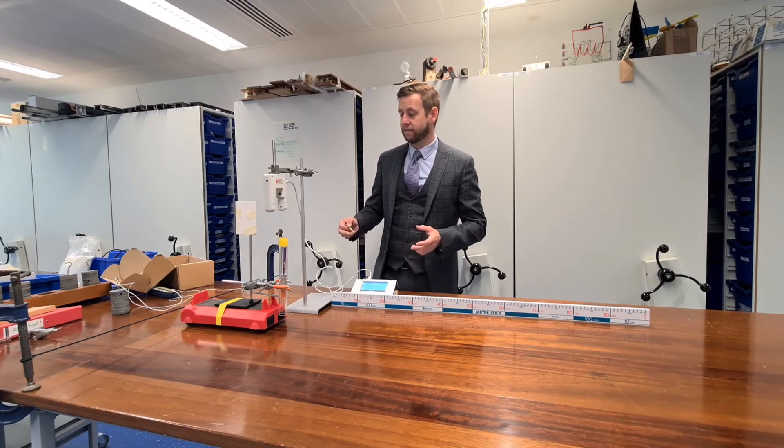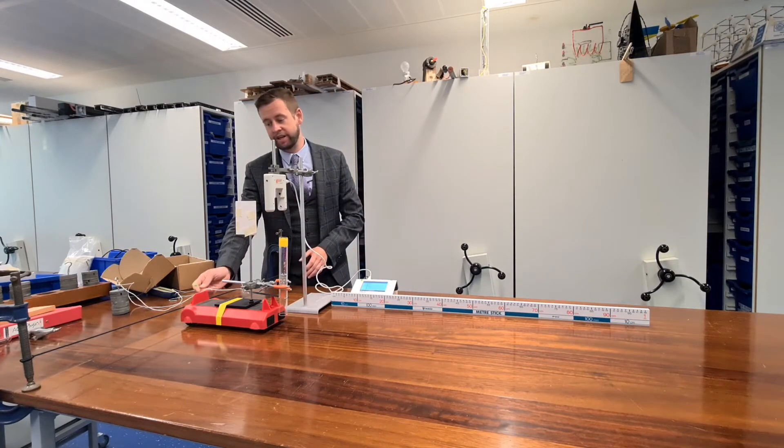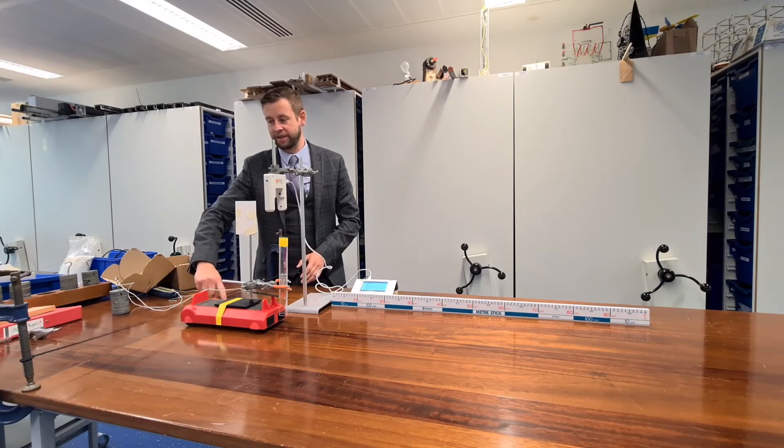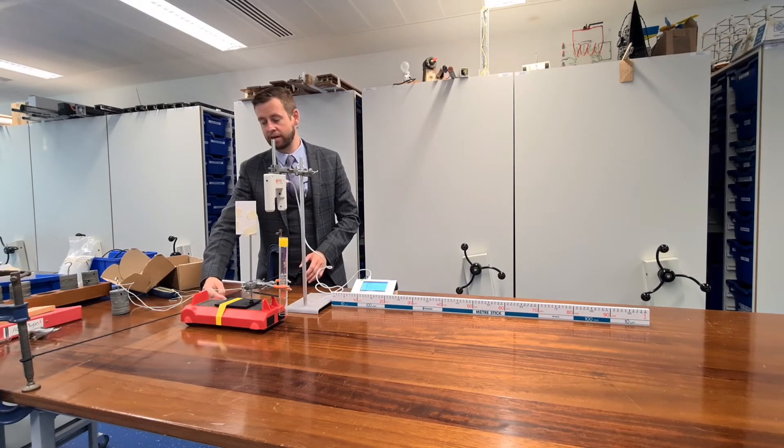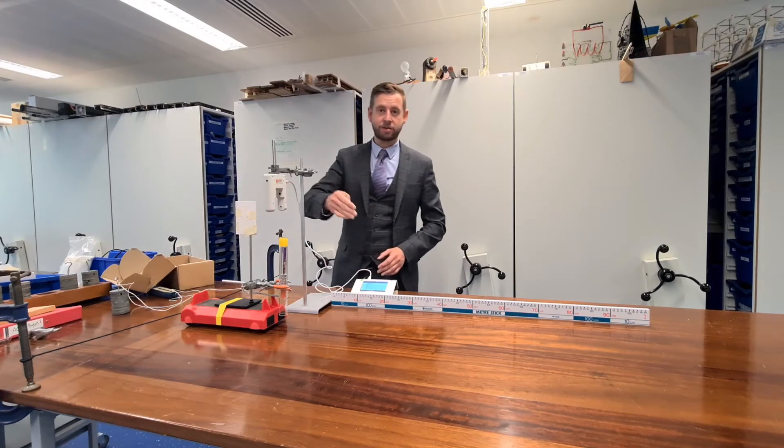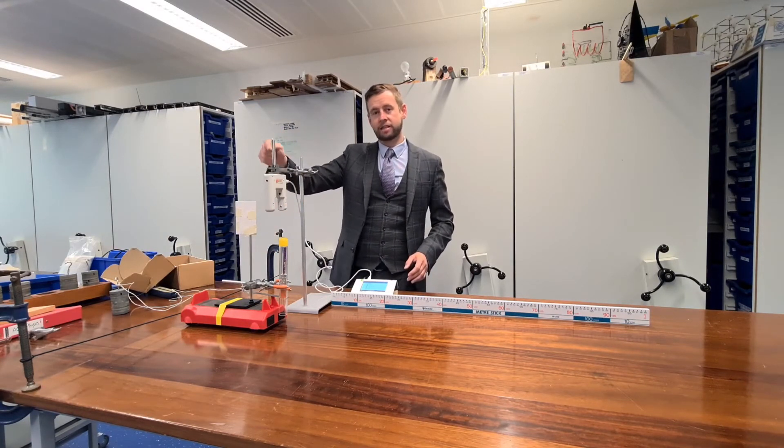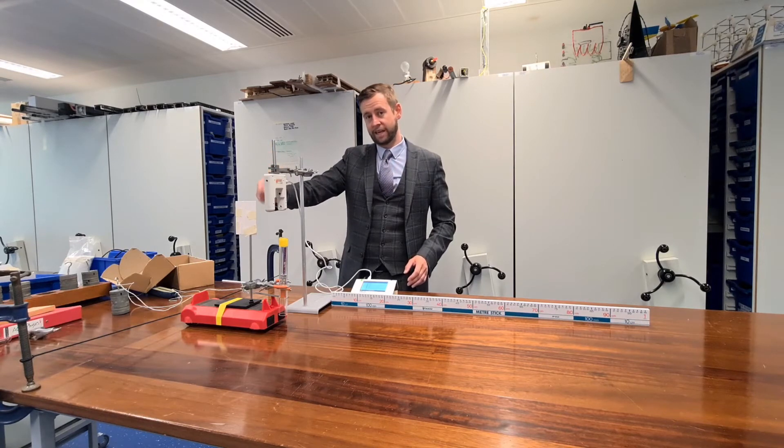And the way that I've done that is I've taken away the thing that the spring is pushing against. And I'm now going to have the car pulled back on this large piece of elastic. The more I pull the car back, the faster it will be travelling as it moves through this light gate. So the light gate is going to tell us what the velocity of the car is.